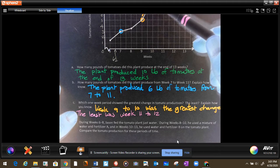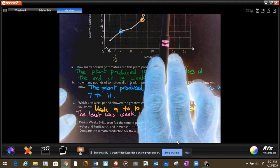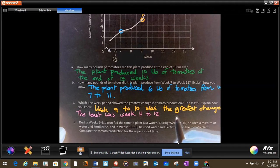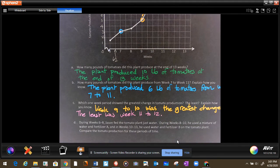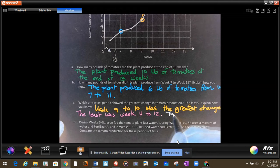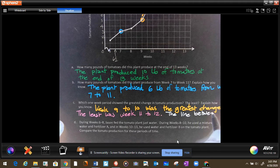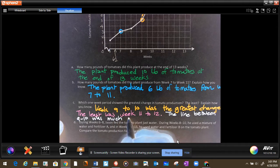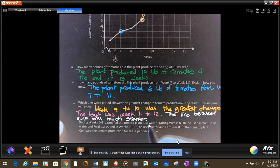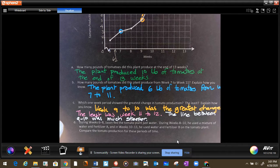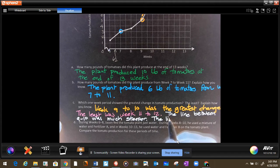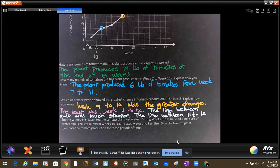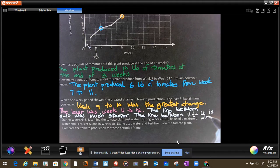Notice that on the greatest, the line is much steeper, and on the least, the line is almost flat. That's how you explain it. So let's write that information down. The line between 9 and 10 was much steeper. And the line between 11 to 12, it's almost flat.